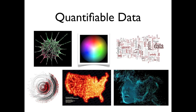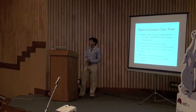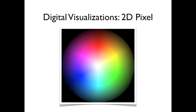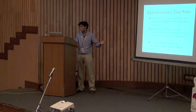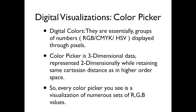Everyone has used a color picker at least once, but not many know it's also a visualization. There is a specific reason why yellow is placed between red and green, or blue between magenta and cyan. Digital colors are groups of numbers — RGB, CMYK, or HSV — displayed through pixels. A color picker is actually three-dimensional data (RGB has three dimensions) reduced to a two-dimensional form using algorithms that retain the same Cartesian distance in higher order — meaning the distance between red and yellow is preserved in both 2D and 3D space. Every color picker is a visualization of numerous RGB values.